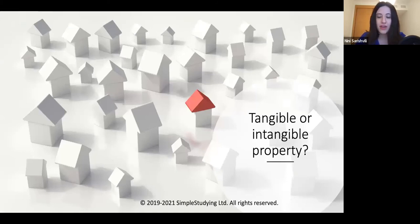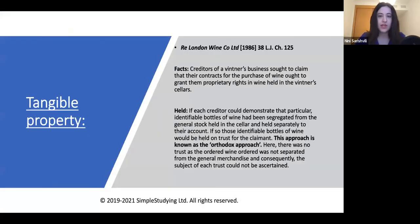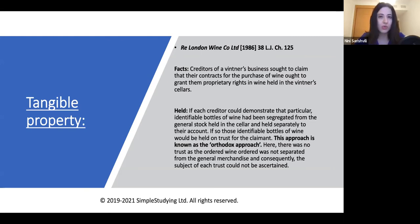It is very important that in a problem question you take into consideration whether the subject matter of the trust is tangible or intangible. If it is tangible property, the case you need to cite is Re London Wine Co. In that case, the subject matter of the trust was wine, and it was not clearly identified exactly which bottles of wine were the subject of the trust. Therefore, the trust failed.